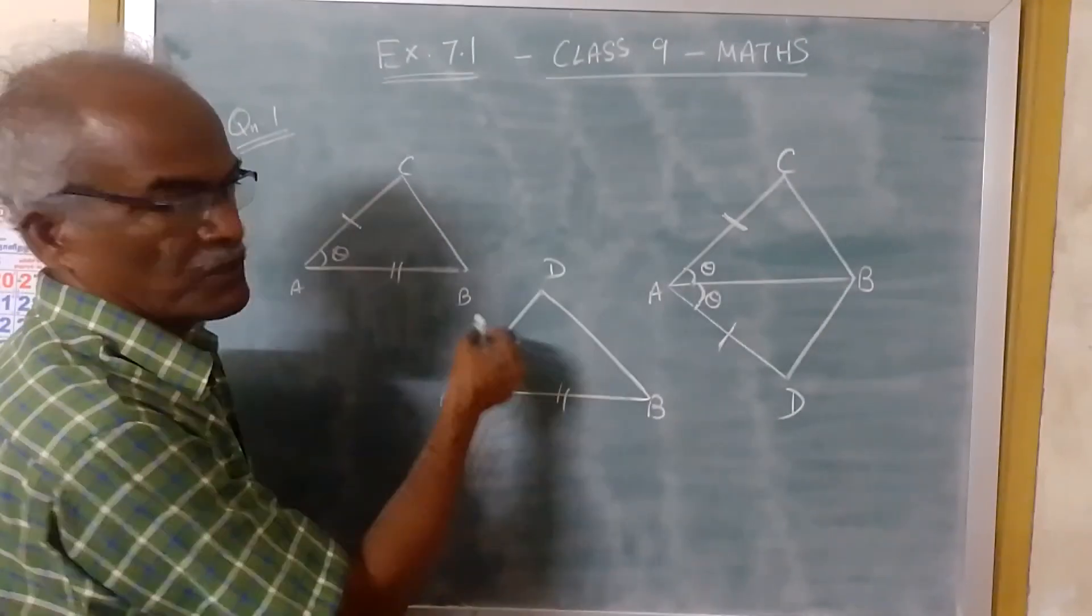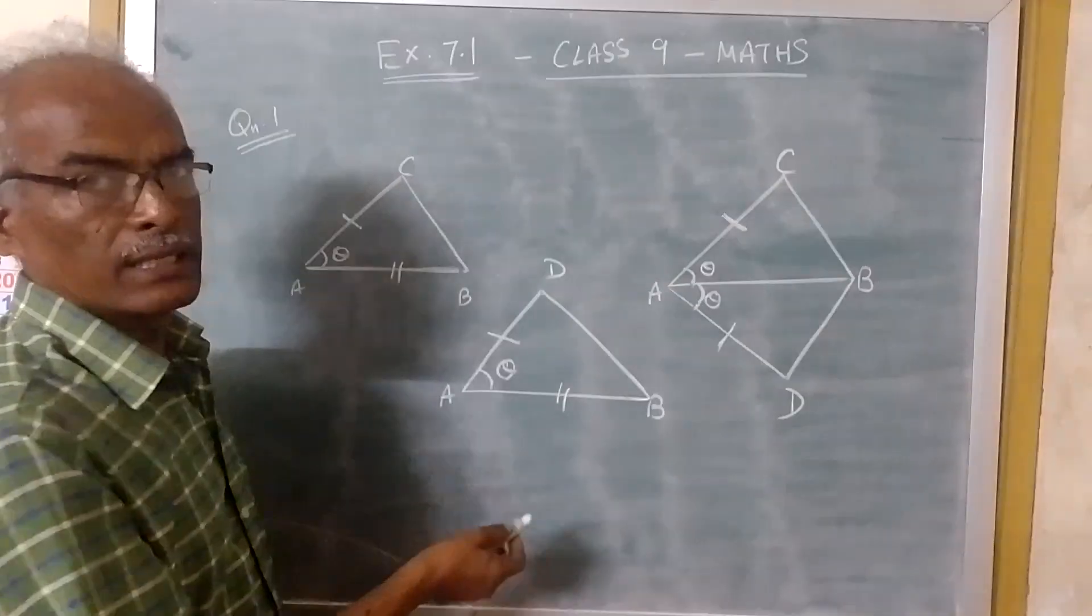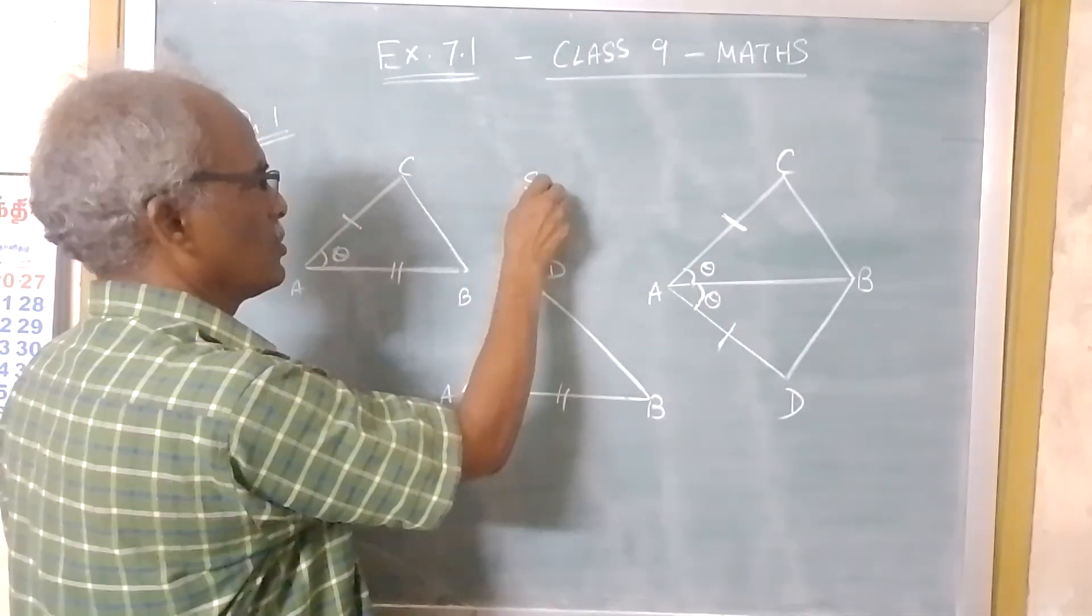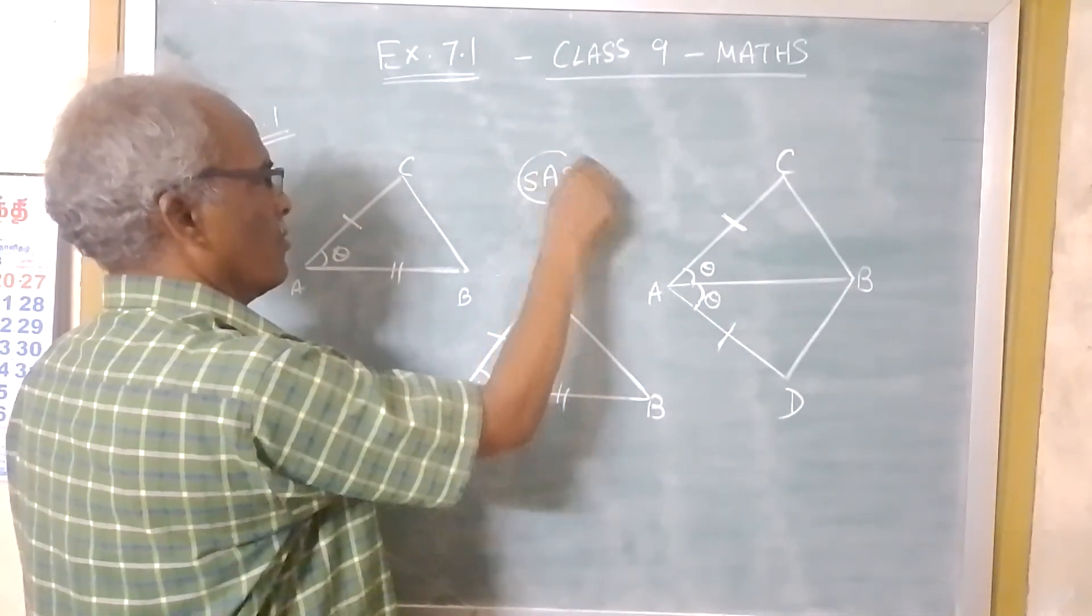So now if you see the triangles, both the triangles: side, angle, side. SAS rule is verified.